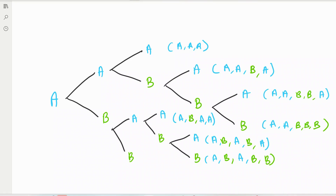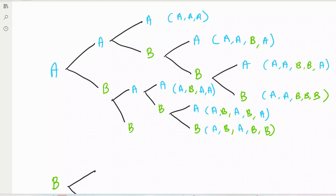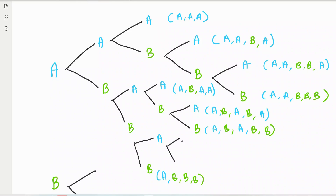Continuing the tree: A wins, B wins, B wins — next match A wins, then A wins again: that's three for Ali, stop. Branch A, B, B, A, A — Ali wins. Then below: A wins, B wins, B wins, A wins, B wins — Basri gets the last point. Branch ends. Then: A wins, B wins, B wins, B wins — three for Basri, stop immediately.